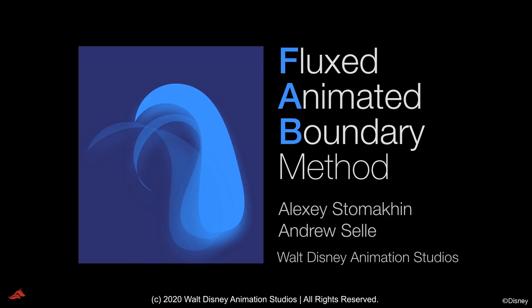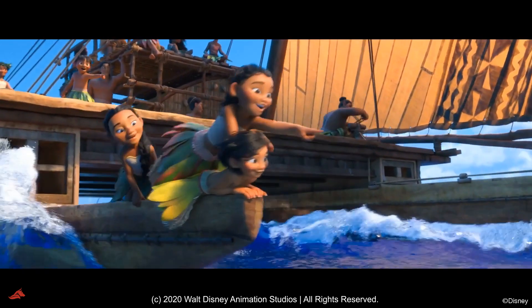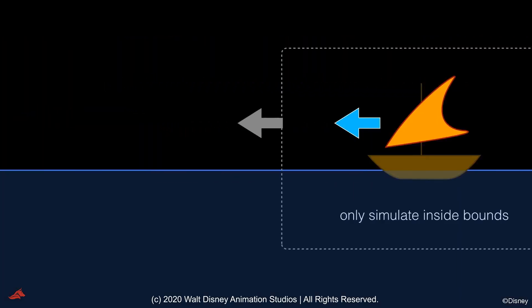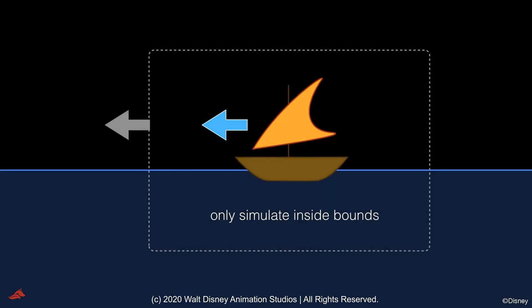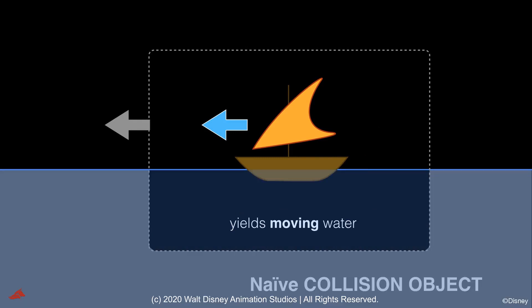The focus of this paper is to help artists art-direct fluid sims. An animated boat on a body of water is a common scenario. Computation limits force us to only simulate a window around the boat, but forcing the simulation to interact with the unsimulated water is difficult. Practitioners often use naive approaches like collision objects, but this improperly accelerates the simulated fluid.